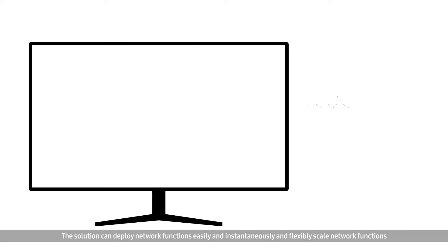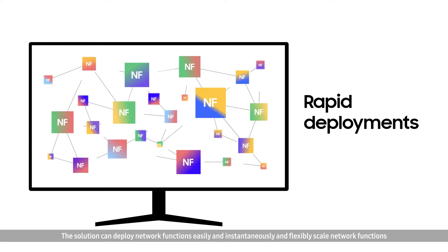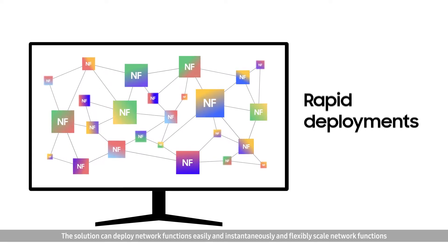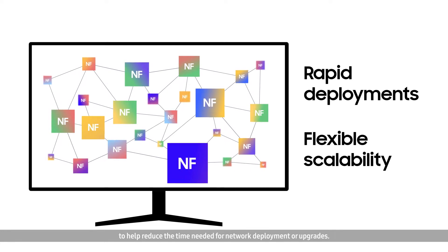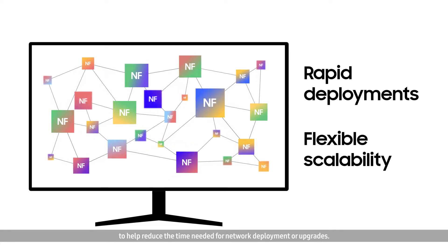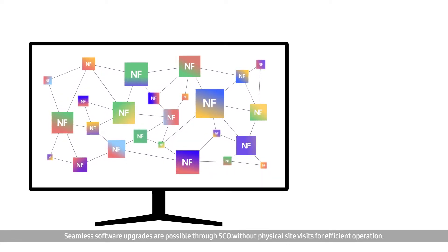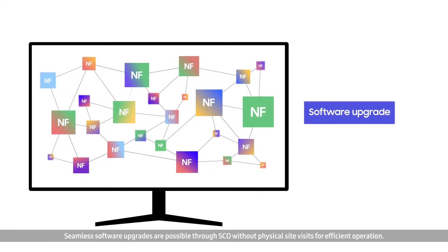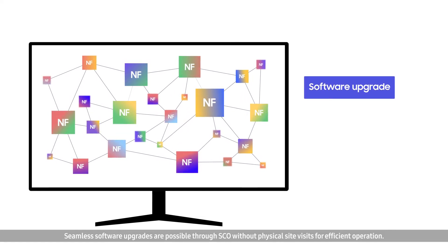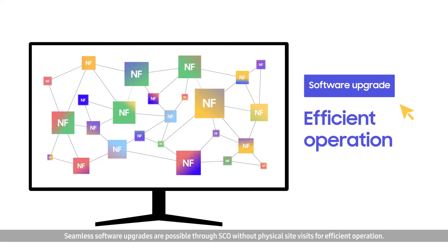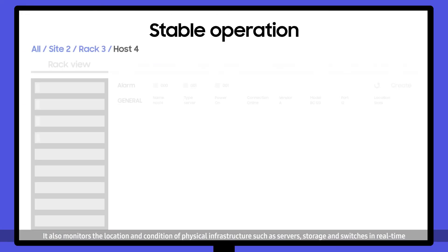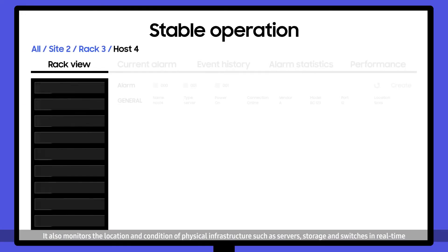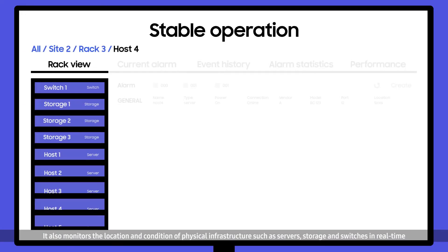The solution can deploy network functions easily and instantaneously and flexibly scale network functions to help reduce the time needed for network deployment or upgrades. Seamless software upgrades are possible through SCO without physical site visits for efficient operation. It also monitors the location and condition of physical infrastructure, such as servers.